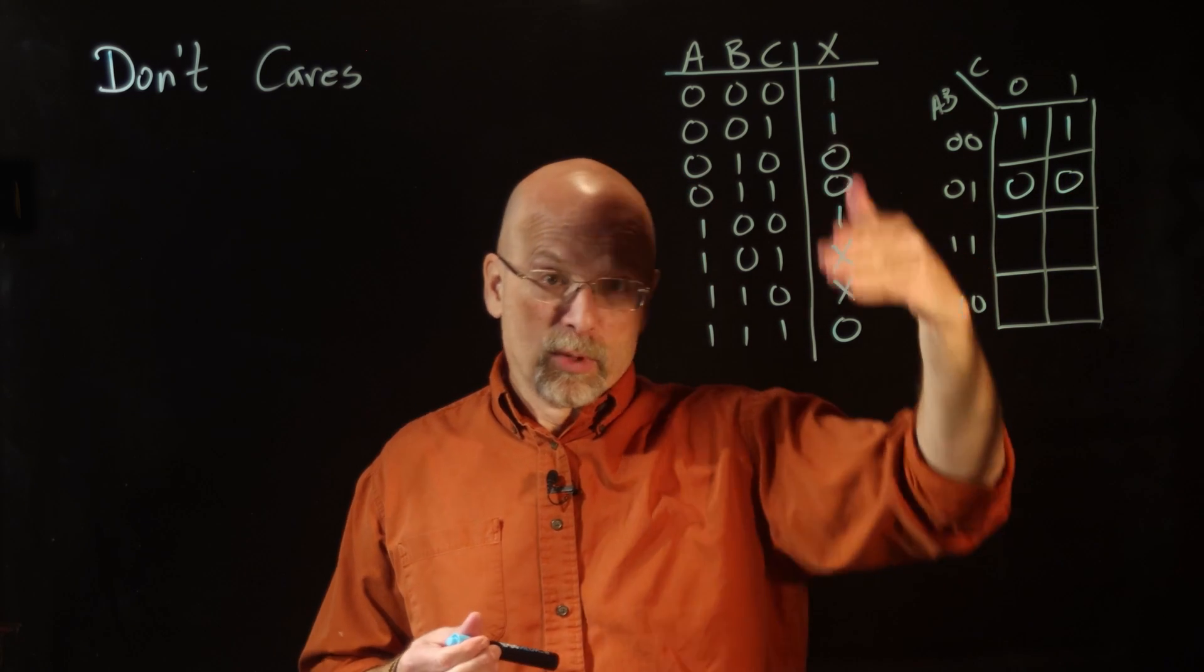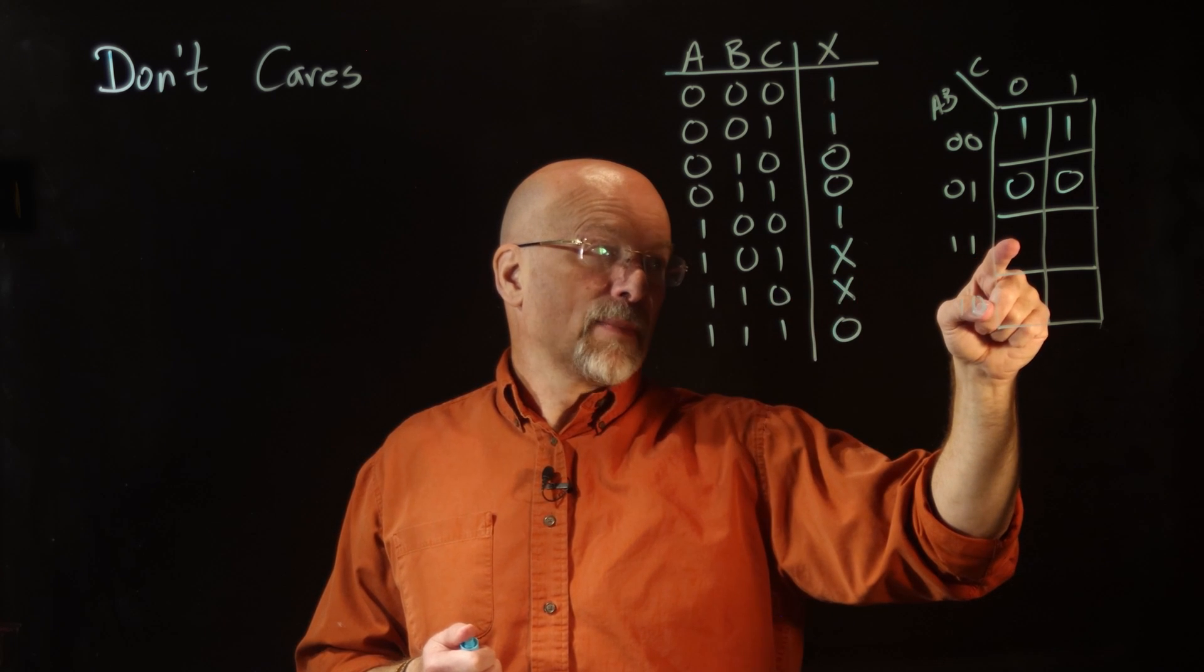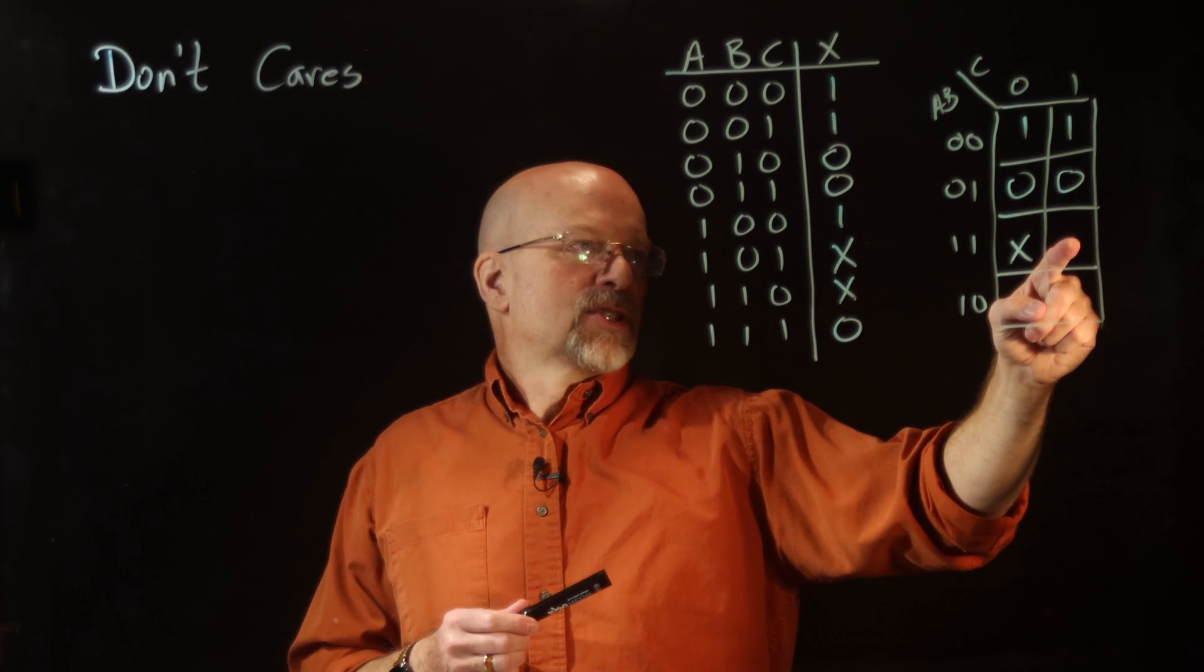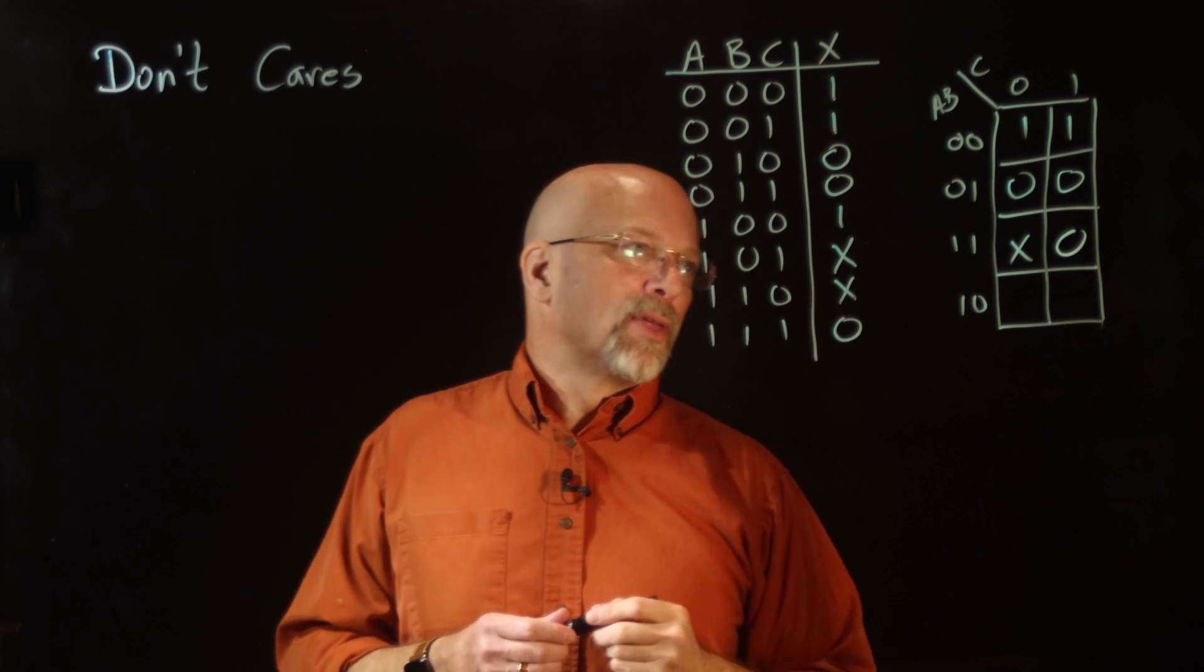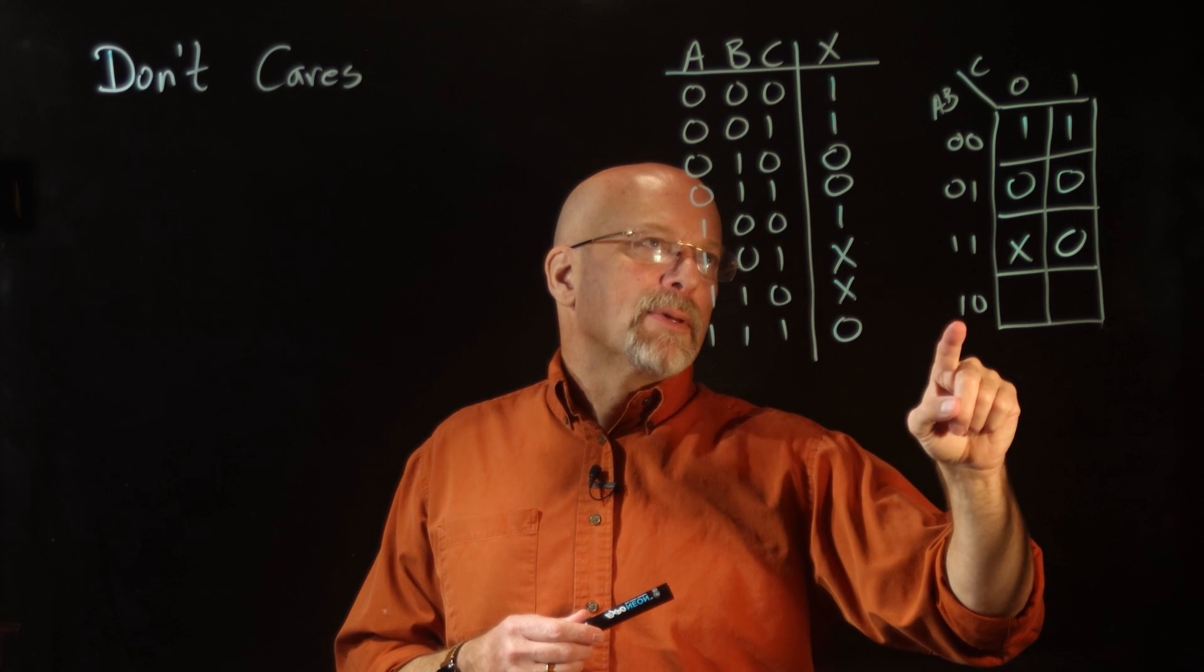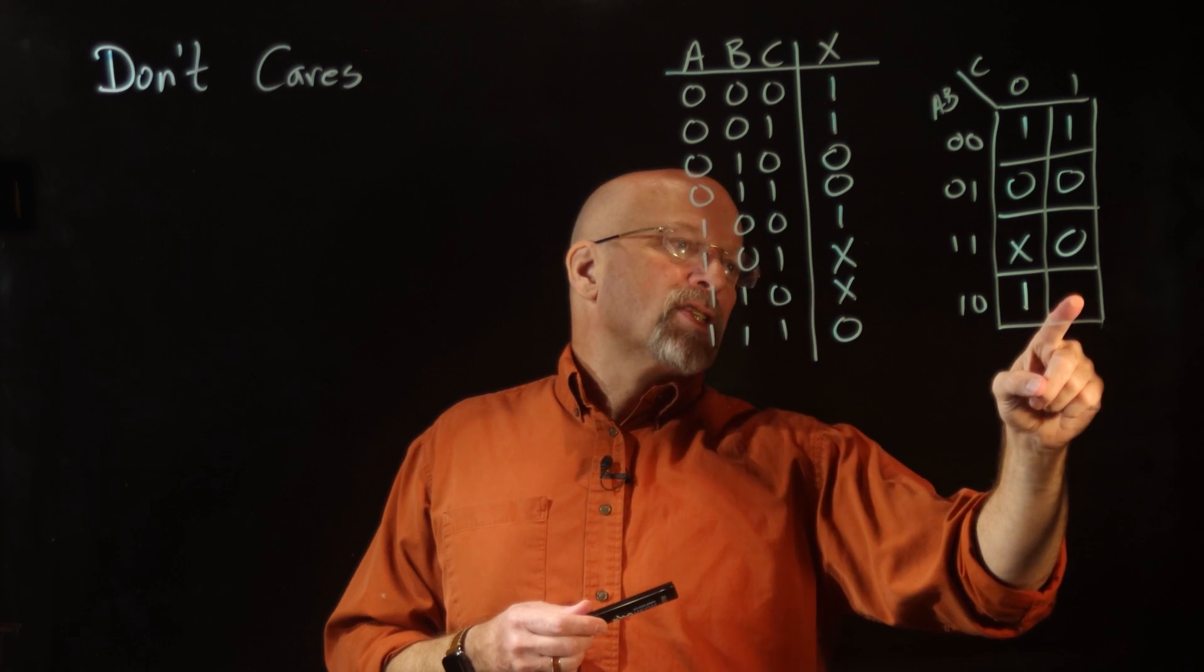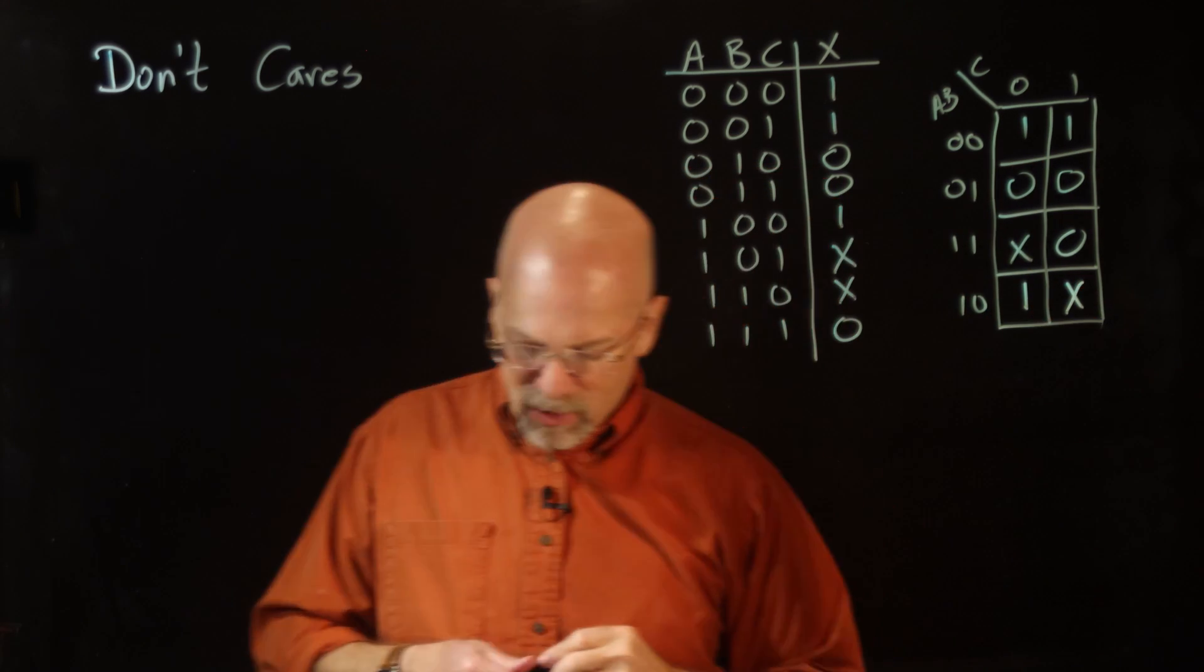Now, remember, because of the gray code, we're going to do that funny little jump in the rows of the truth table. So the Karnaugh map has that cell, 1, 1, 0, that jumps us down to the seventh row where we have an X. This cell right here is 1, 1, 1, that's the bottom row of our truth table. There's a 0 there. Now, the bottom left cell of our Karnaugh map is for A is 1, B is 0, C is 0. That is the fifth row where we have a 1. And this cell right here, 1, 0, 1, that is the sixth row, we have an X.